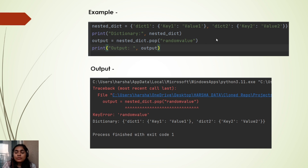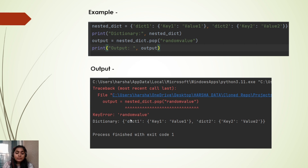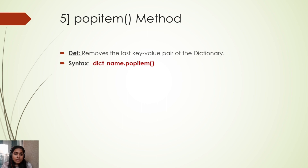Now let's say we are trying to remove an element which is not present in the dictionary. Here we are trying to pop a random value not present in the nested dictionary. It is going to throw a KeyError, indicating that the key is not available in the nested dictionary.